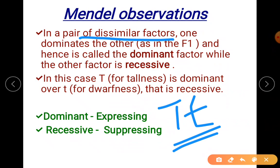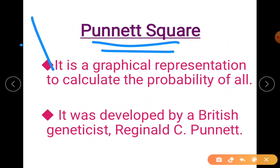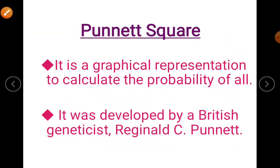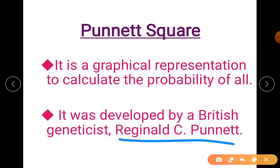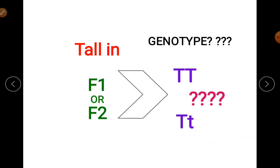In a pair of dissimilar factors, capital T is dominant and small t is recessive. The dominant expresses while the recessive is suppressed. The Punnett square — a graphical representation used to calculate the probability of offspring genotypes — was given by Reginald Punnett. Mendel used this idea to provide a proper representation of his data. It shows what kinds of offspring can come from a cross.